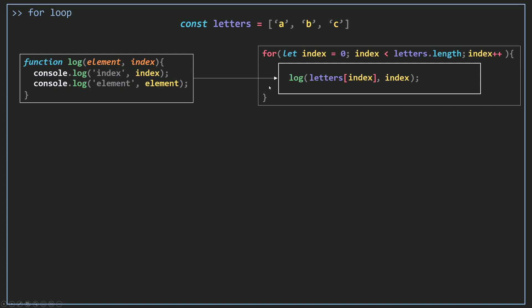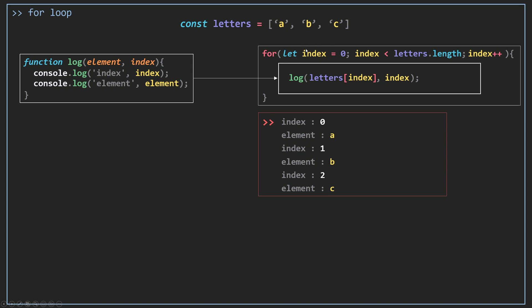Now instead of those two lines of code, I'm going to call log with letters at index as the element and then the index. If this code runs, I'm going to get the same results as before. So we can say that the for loop is calling or invoking the function log on each element of the array — the first, then the second, then the third.